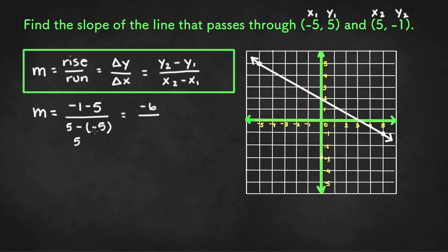5 plus 5 is 10. And we can simplify this to get negative 3 over 5. And that will be our final answer.